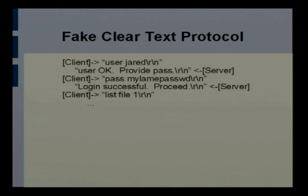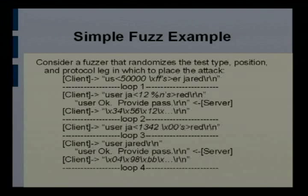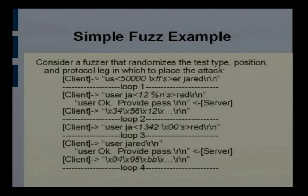Say we have this fake little protocol: user Jared, that's a client, and the server says okay, give me your password. Password sent, server says all right, here's a command. Now how would you fuzz that? In loop three I send 'user Jared' and get a response, then I give some random data. That's not truly random fuzzing because we have some protocol knowledge — we send the first leg, get the second leg, then send crazy stuff in the third leg.